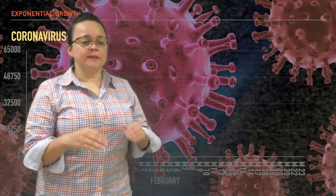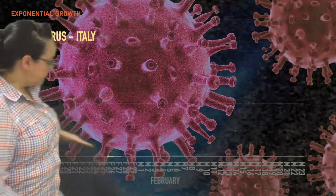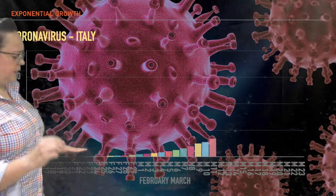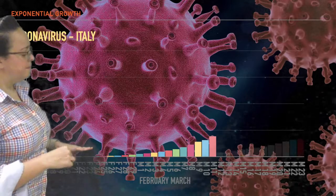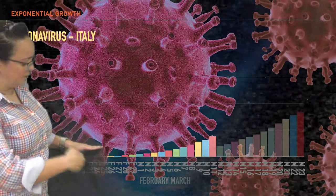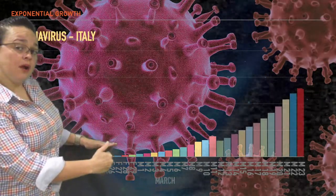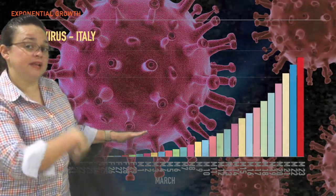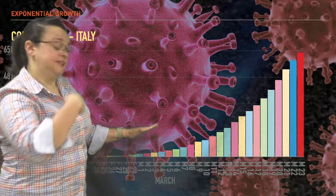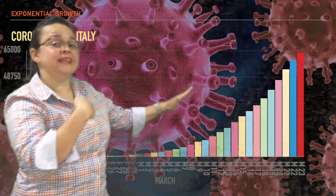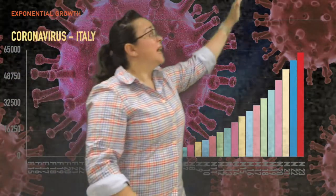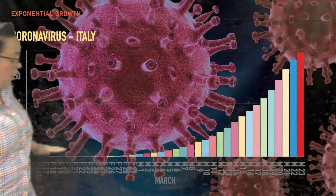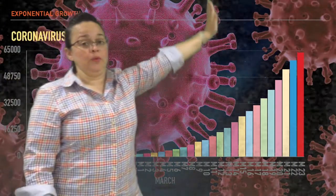Exponential growth is when our data starts at low numbers and we notice it's barely moving or not moving at all. But suddenly, as we go on every step, we notice that our numbers are increasing. And every time it increases at every step, the increase is higher and higher to the point that it's growing very rapidly until we end up at very high numbers. This curve is what we call exponential growth.